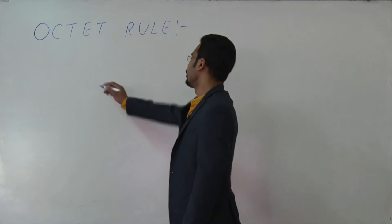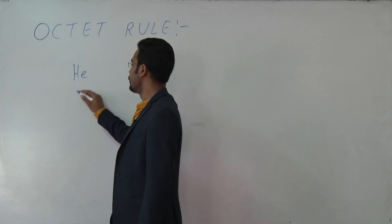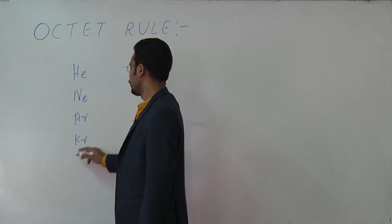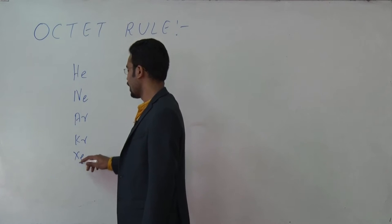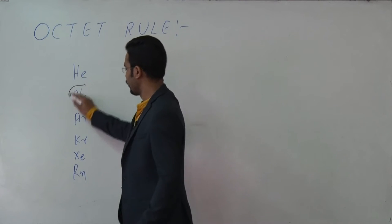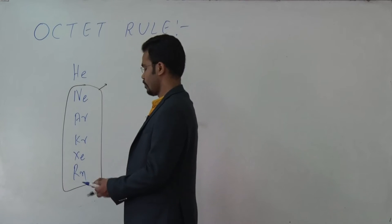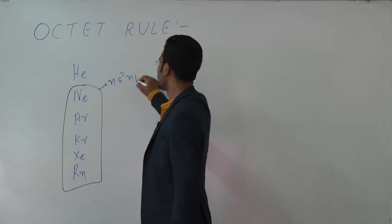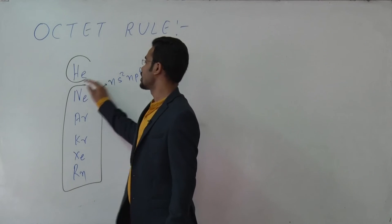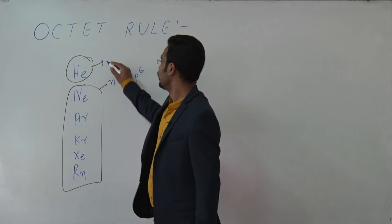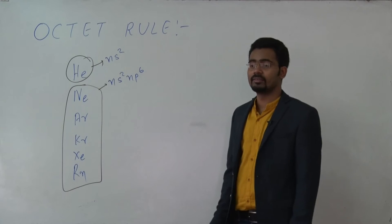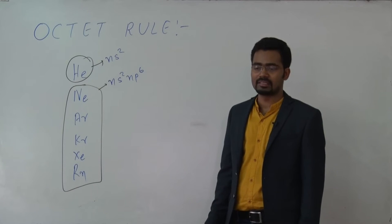Here you have helium, neon, argon, krypton, xenon, radon — these are the noble gases. All have ns² and p⁶ configuration, while helium is special, having only ns². As you know, noble gases are inert and cannot participate in chemical reactions.